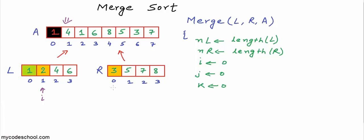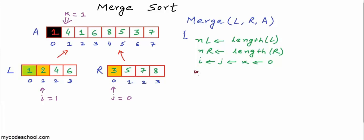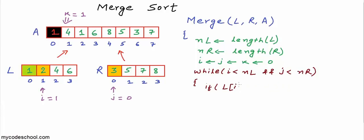I'll take three variables i, j, and k, initialized all to 0. i marks the index of the smallest unpicked in L, j marks the index of the smallest unpicked in R, and k marks the index of the position to be filled in A. For our example at this stage we have i equal 1, j equal 0, and k equal 1 because we have already filled one element at index 0 in A. But when we start, all three i, j, and k are 0. The code goes: while i is less than nL and j is less than nR — meaning both indices are valid — we check if L[i] is less than or equal to R[j].